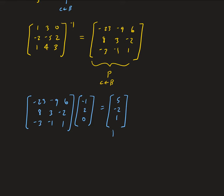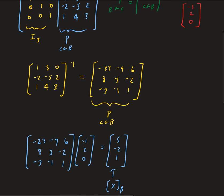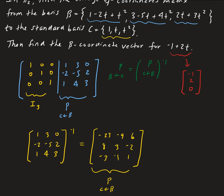This result — 5, minus 2, 1 — represents our vector in terms of beta. So we can check the result by taking our basis polynomials and treating these as our weights. We take the first weight and multiply it by the first polynomial, the second weight by the second polynomial, and the third weight by the third polynomial. Expanding that out, we should get back minus 1 plus 2t.